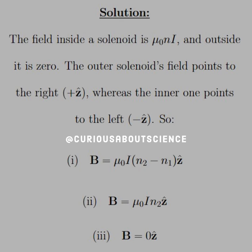In the very inner region, scenario one, we have to take into account both fields. We add positive N2 and negative N1, since the inner solenoid points in the negative Z direction. So B = μI(N2 - N1) in the positive Z-hat direction.